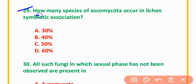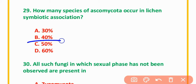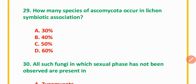MCQ Number 29: How many species of Ascomycota occur in lichen symbiotic association? Options: 30%, 40%, 50%, 60%. The correct option is option C: 50%.